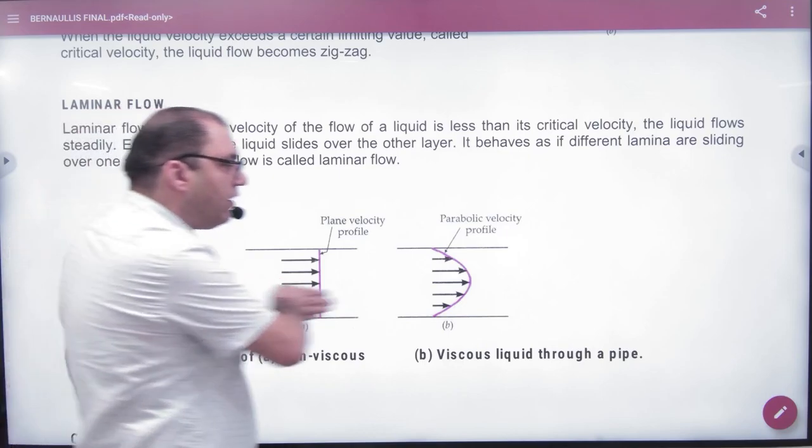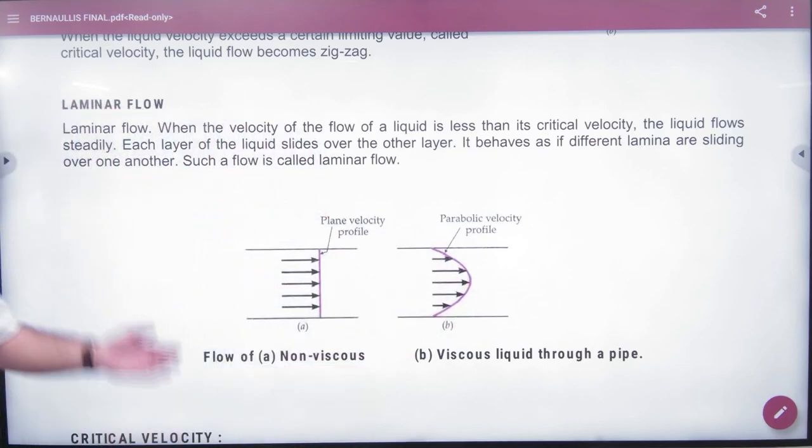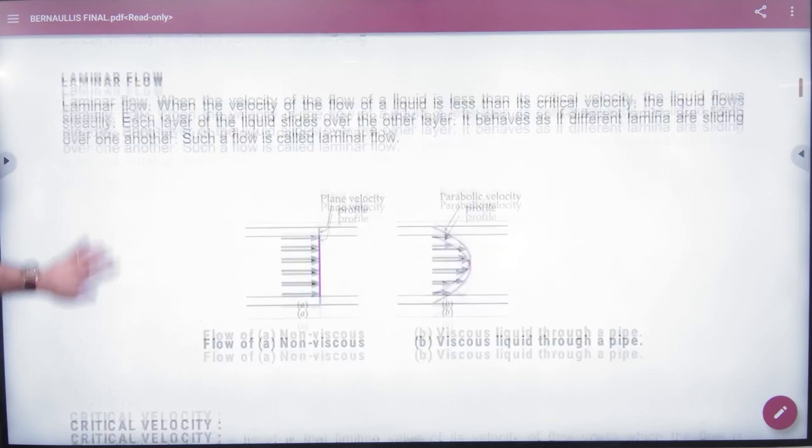But if the particles have different velocities, what will be the path? It will be a parabolic velocity profile. Normally we will study streamline or steady flow.